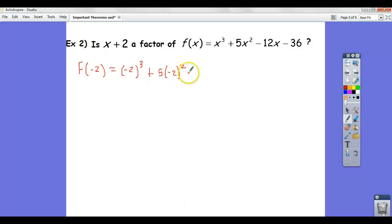Now, again, if we get zero, it is a factor, and if we don't, it's not. It's as simple as that. Okay, and this is negative 8 plus 20 plus 24 minus 36.